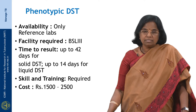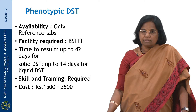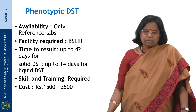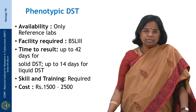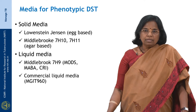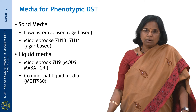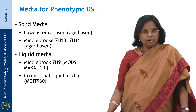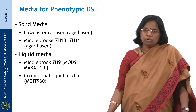Where are these phenotypic DST tests available? They are available only in reference laboratories because of the requirement for biosafety level 3 facilities. The time to result may be up to 42 days for solid media DST or up to 14 days for liquid DST. A significant amount of skill and training are required and the DST may cost anything between 1500–2500 per test. The media used for phenotypic DST could be solid media — examples being Lowenstein Jensen medium or Middlebrook 7H10 or 7H11 media — or liquid media, where in-house prepared Middlebrook 7H medium can be used or commercial liquid media can be used in commercial systems.